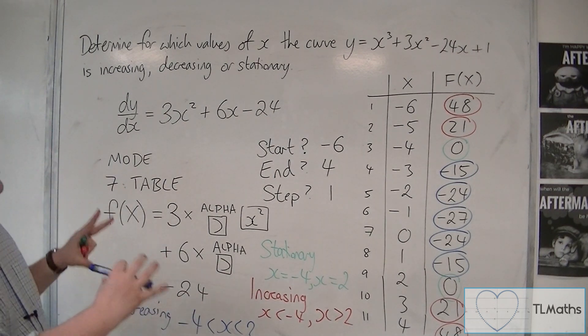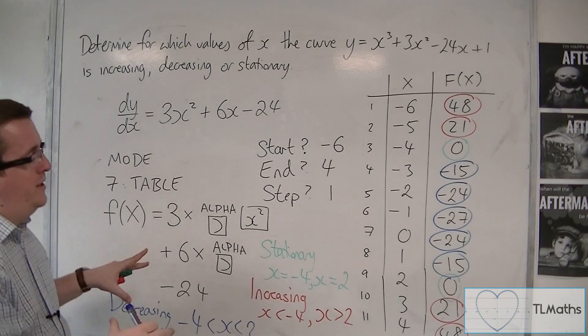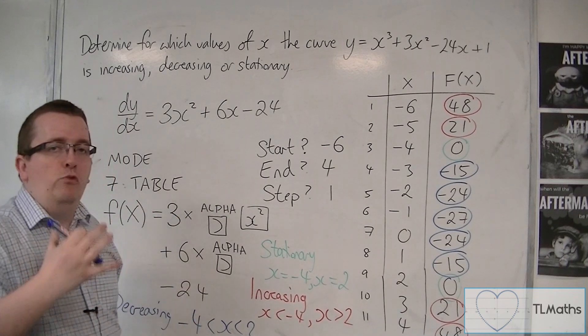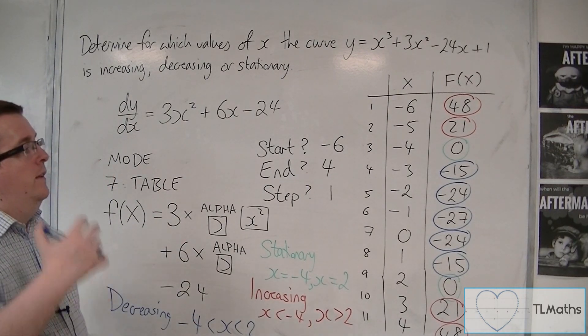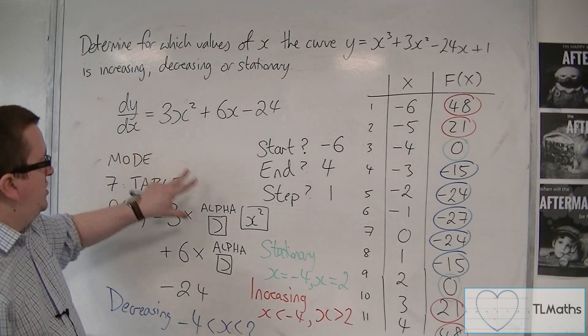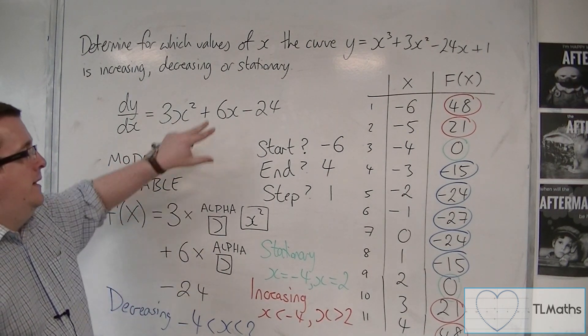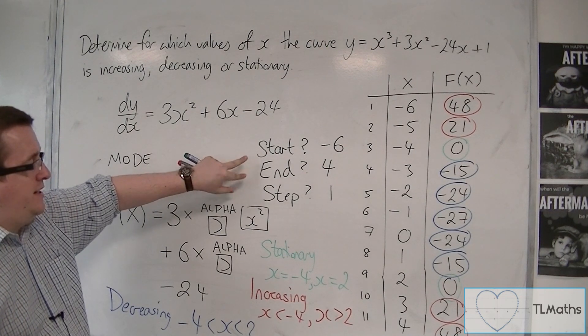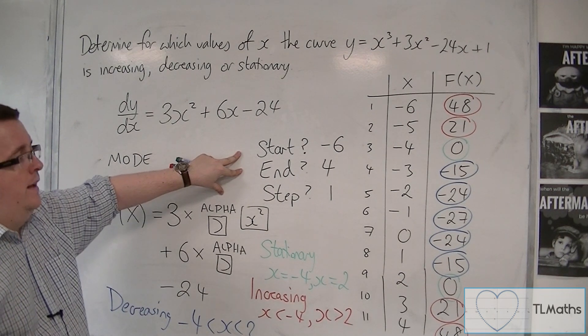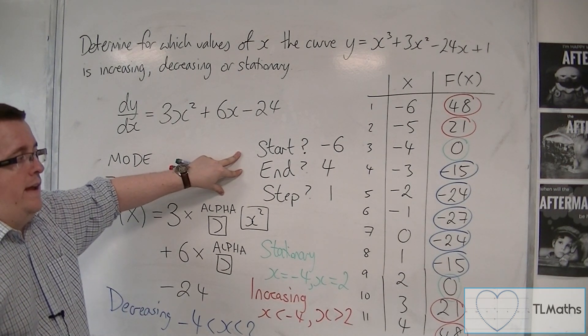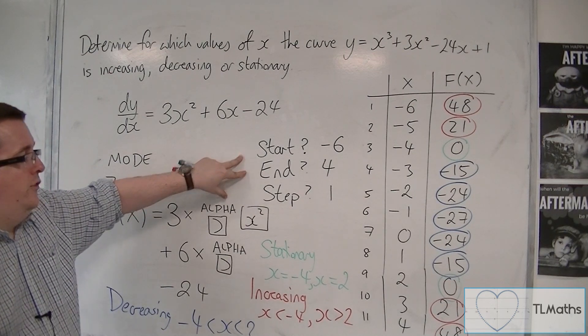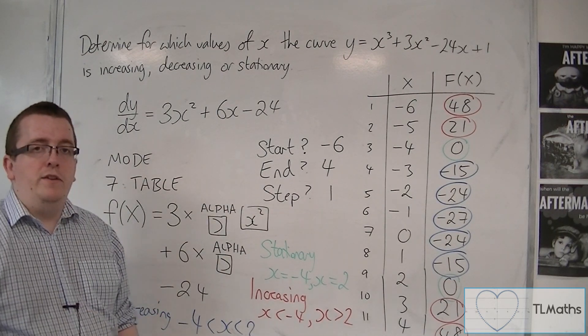But what I want to show is that you can use your calculator to help you identify these regions. That functionality is there. So it's well worth knowing how to type your function in, and then how to use these start and end functions in order to find the stationary points and identify where the gradient is positive and negative. So keep this technique in mind. Thank you.